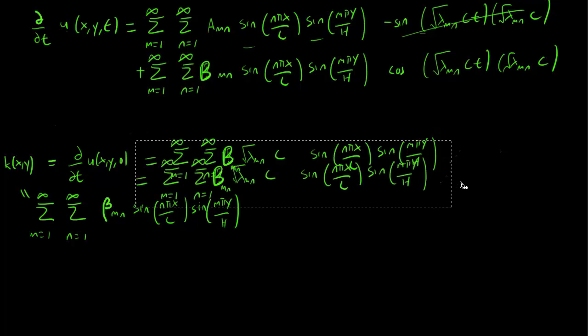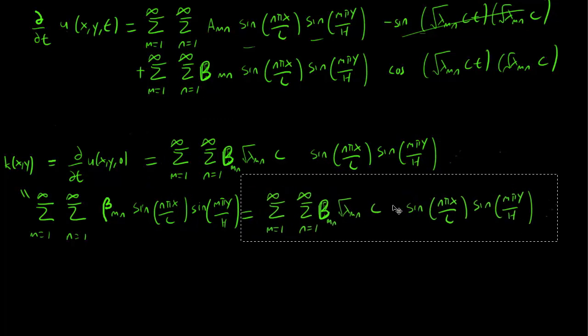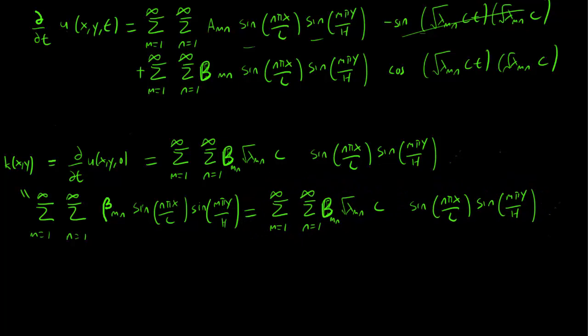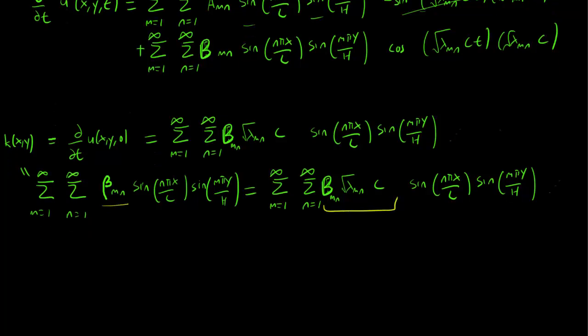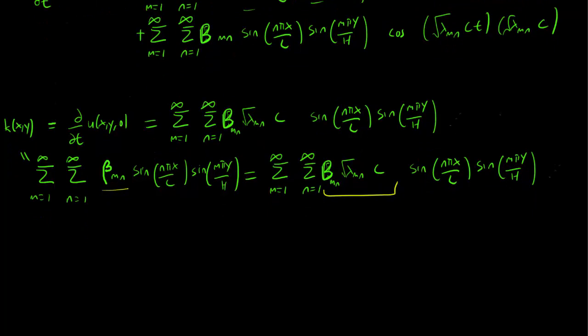We now have, once again, that the beta_mn term has to be equal to the constant term here, because everything else is the same. And therefore, we have that b_mn is equal to beta_mn over √λ_mn times c.